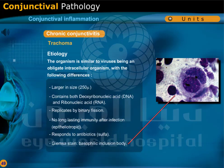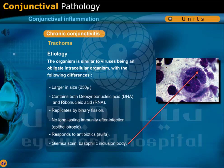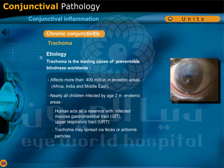The organism is similar to viruses being an obligate intracellular organism, with the following differences: larger in size at 250 microns, contains both DNA and RNA, replicates by binary fission, produces no long-lasting immunity after infection, and responds to antibiotics and sulfa. Giemsa stain shows basophilic inclusion bodies.